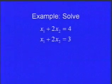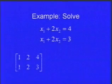Let's solve this system: x1 plus 2x2 equals 4, and x1 plus 2x2 equals 3. Hopefully you can see there's no way that x1 plus 2x2 could be both 4 and 3 at the same time. But here's what happens if you put that into an augmented matrix and solve it.